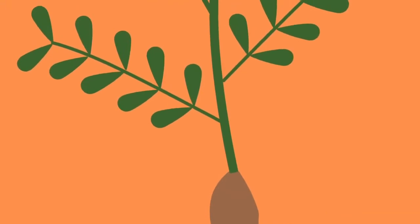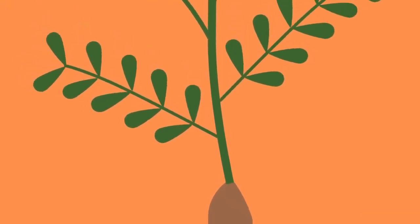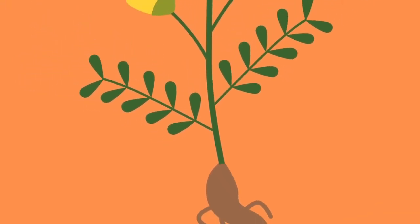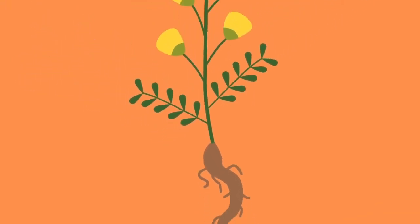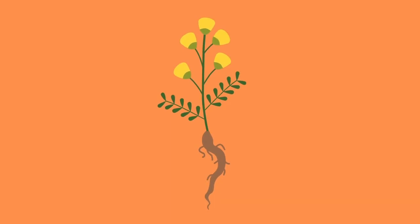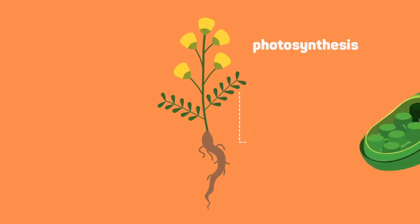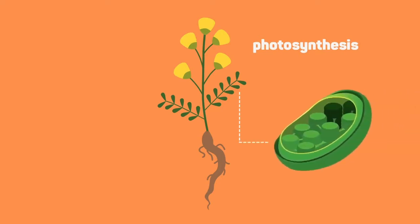Let's learn about the leaves now. Pause the video and try to think why the leaves are important for a plant. The leaves are where photosynthesis happens. In the chloroplasts of the cells, the plants make their own food, glucose. You can learn more about photosynthesis in this video.